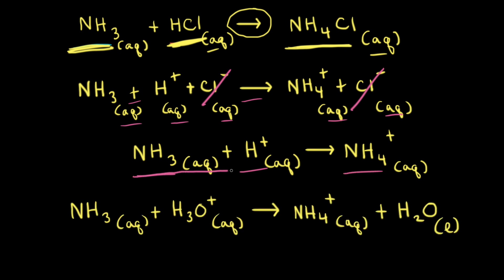That's one way to write the net ionic equation. However, H+ and H3O+ are used interchangeably in chemistry. Therefore, another way to write the net ionic equation is: aqueous ammonia + H3O+ → NH4+ + water.